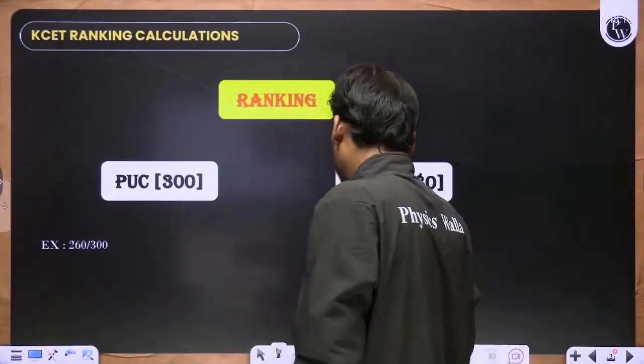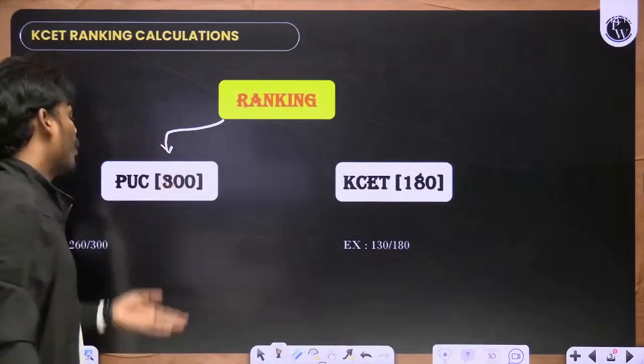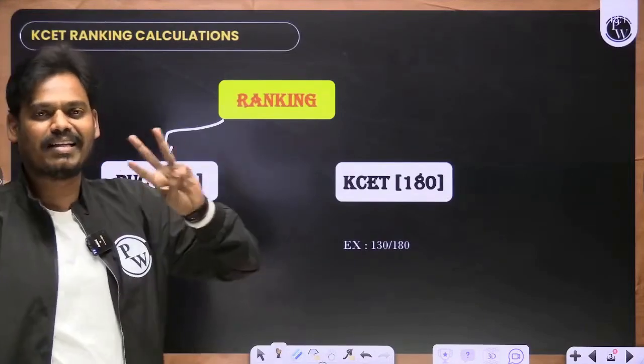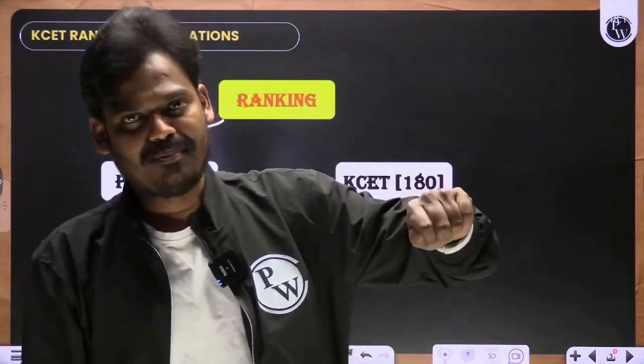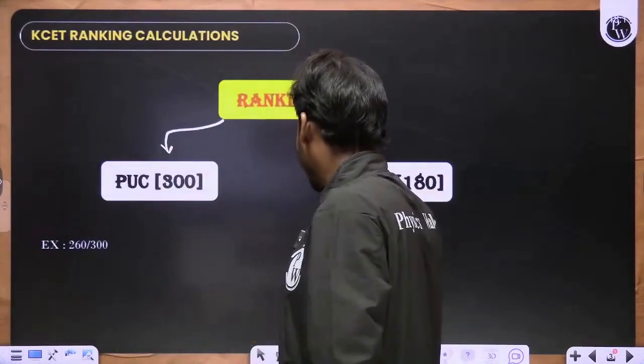The ranking is based on two categories. One is PUC out of 300 - three subjects PCB or PCM. Three subjects, 300 total. Let's consider this as an example.